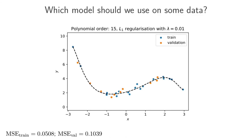As one additional example showing the power of regularization: this is again a 15th order polynomial, but regularized with a regularization parameter of 0.01 using lasso (L1). We can see that we're still getting a pretty good validation loss. This could have been an alternative model to choose, though I would have needed to tune the regularization parameter on the validation data.